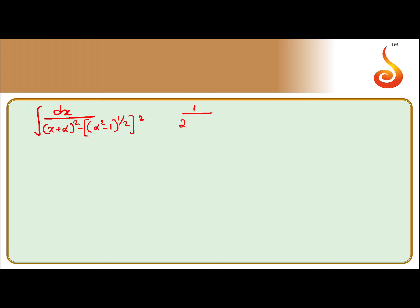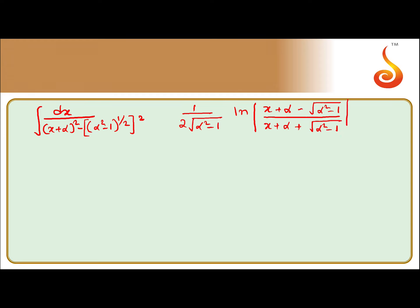It has taken the form of x squared minus a squared. So the answer is 1 by 2 times under root of alpha squared minus 1, times log of x plus alpha minus under root of alpha squared minus 1, divided by x plus alpha plus under root of alpha squared minus 1, plus c.